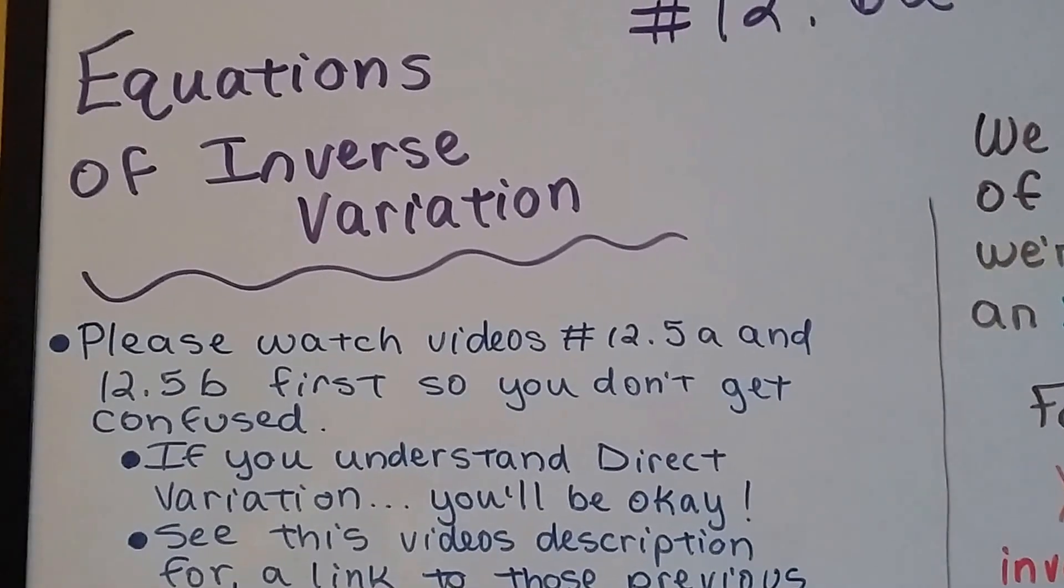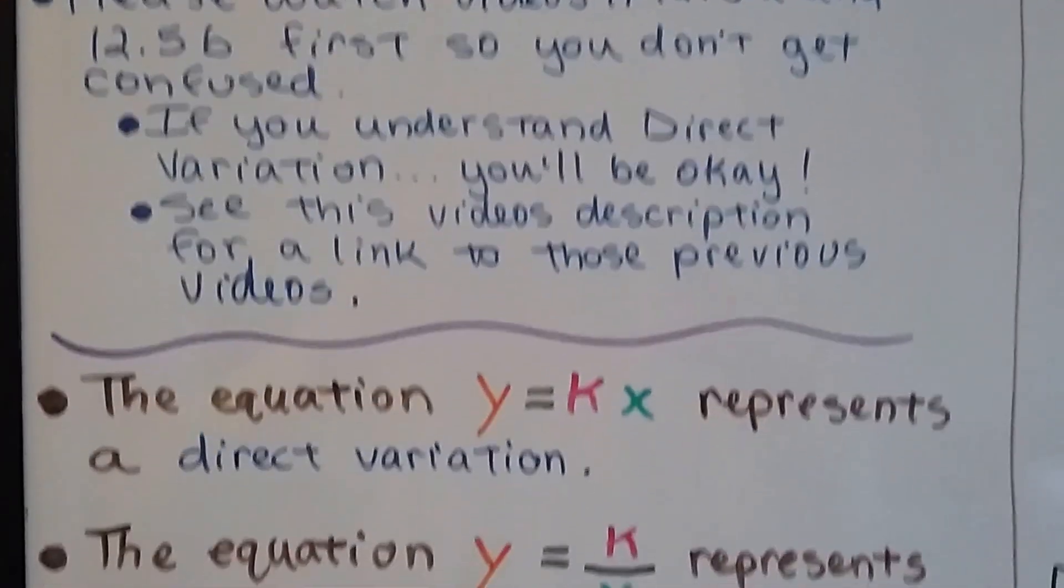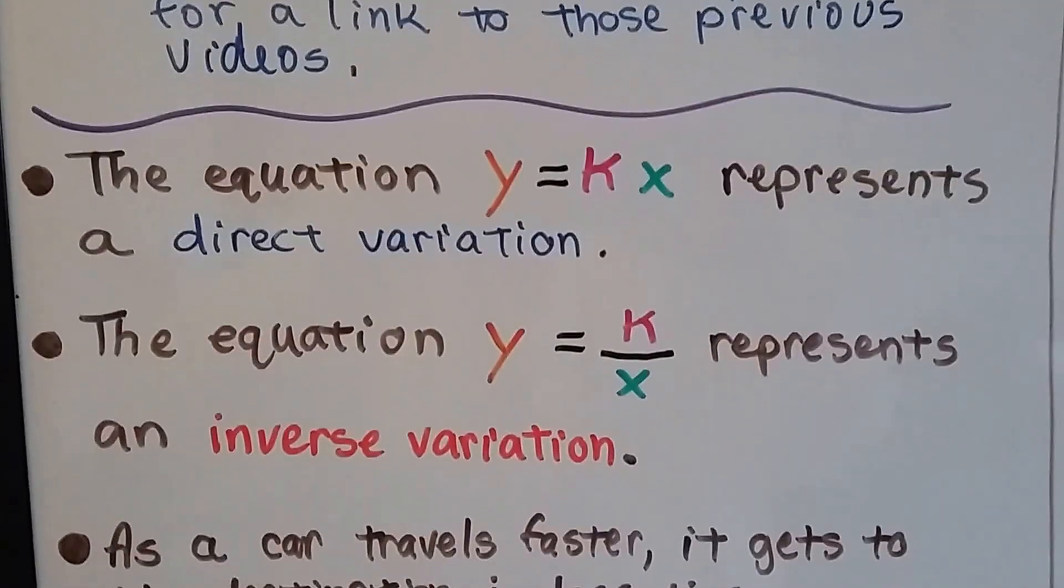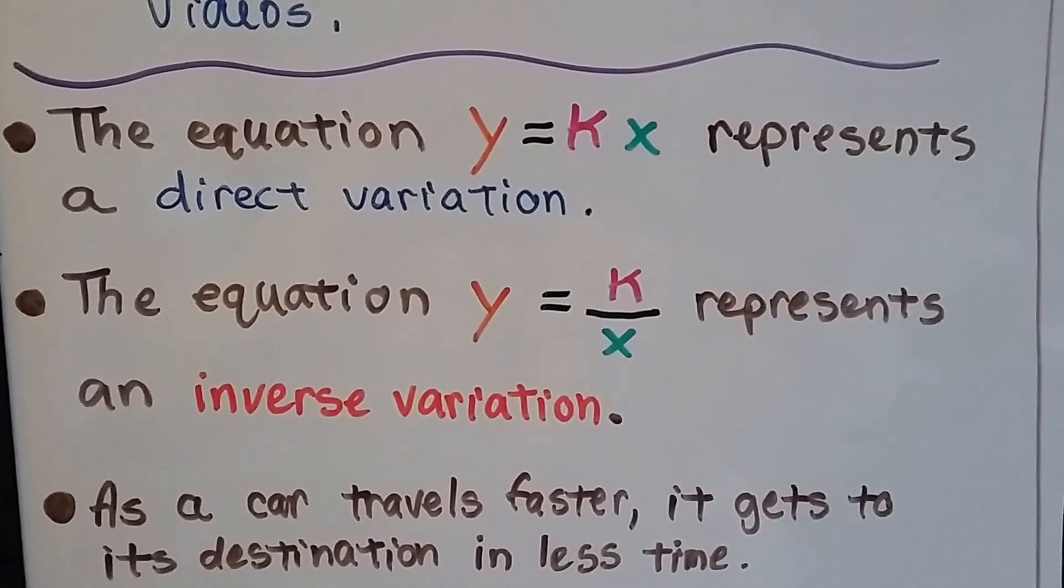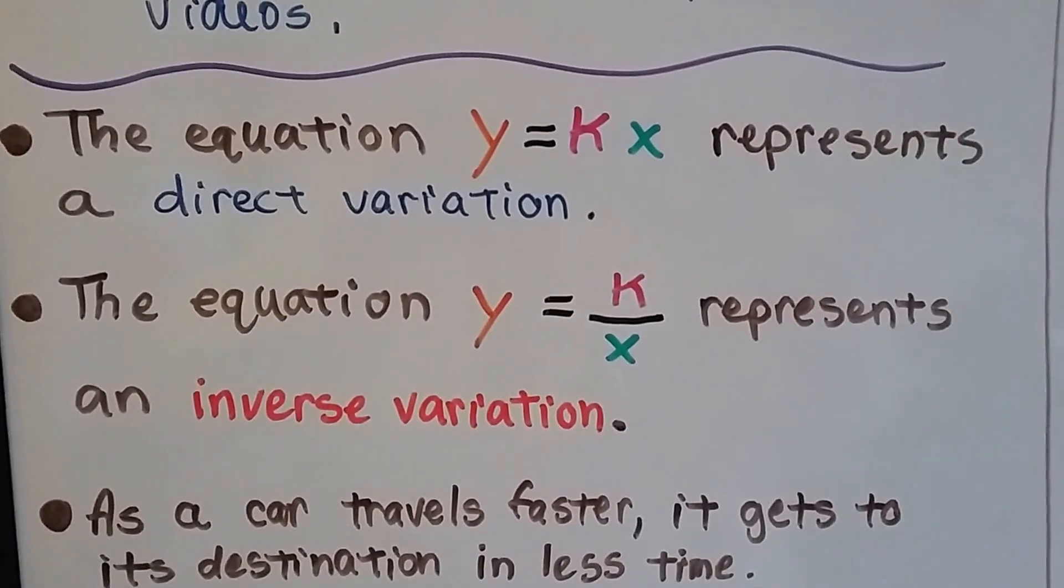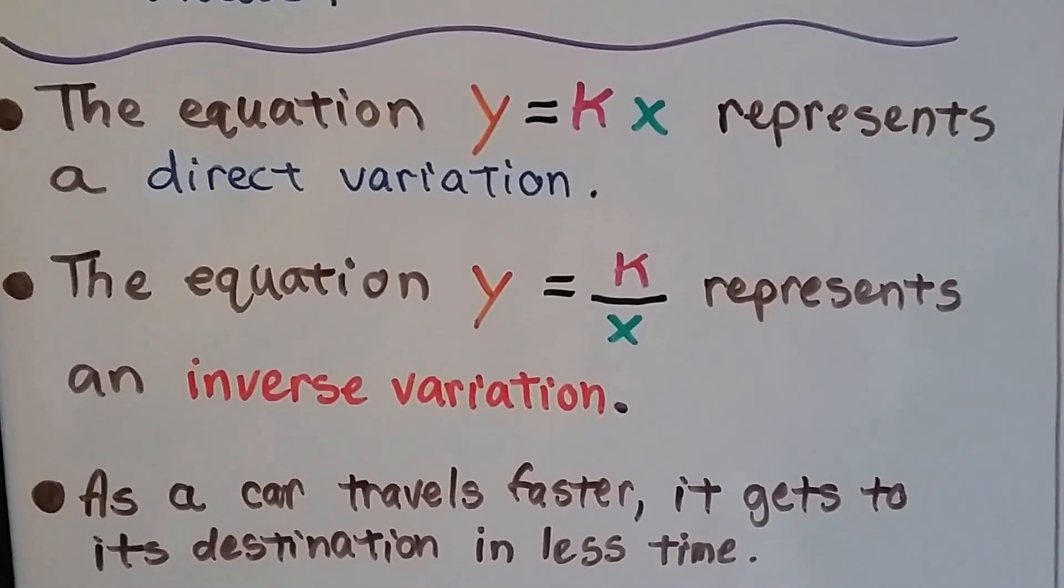If you do understand direct variation, you'll be fine. So the equation y equals kx represents a direct variation, and the equation y equals k divided by x represents an inverse variation.